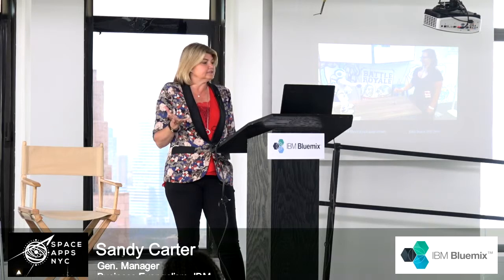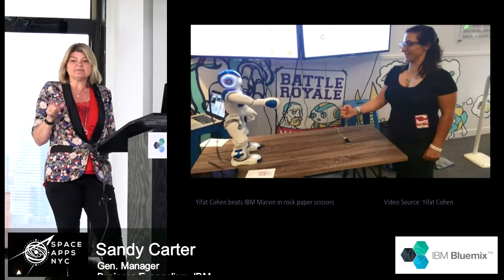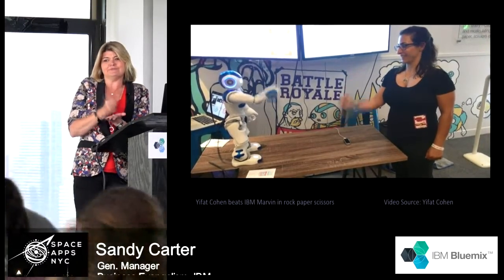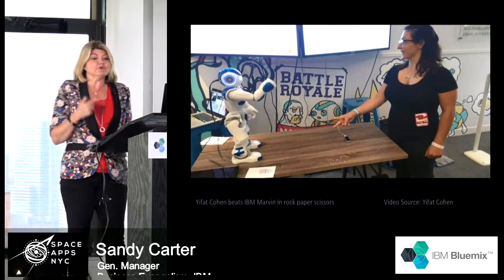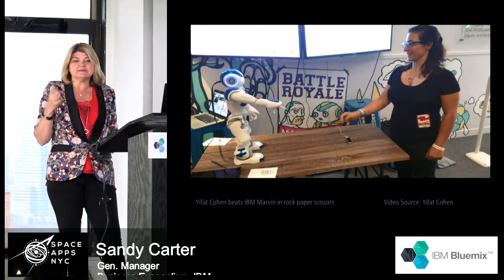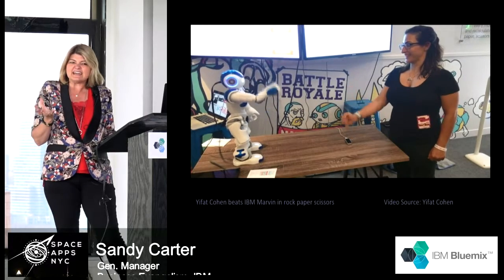Marvin is visualizing because he has to see what their hand signals are. He's processing all the data in the background to do trade-off analysis. For instance, Marvin taught me that men 80% of the time will start with rock — the power, the force. So if you want to beat a man on your first time out, typically you could do paper. And women 80% of the time start with scissors. So there's a lot of data, a lot of artificial intelligence that goes into this.